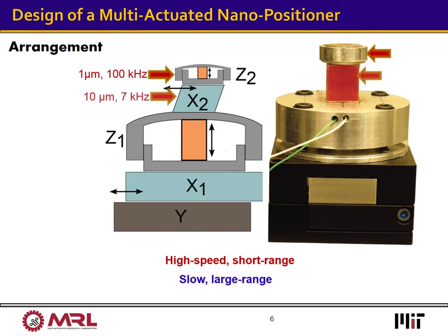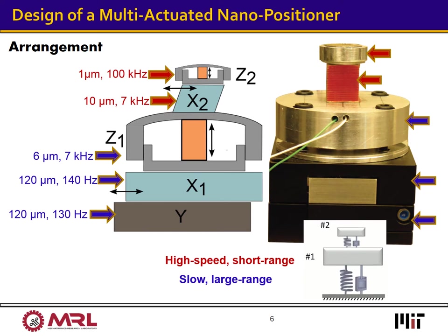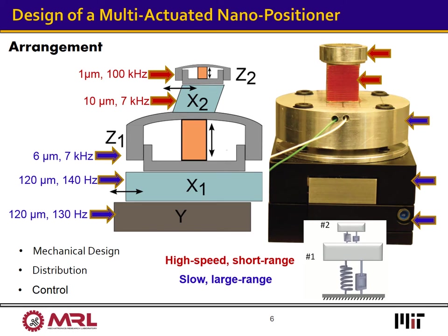To achieve large positioning range and high speed at the same time, we propose a nanopositioner design composed of several actuators, some featuring high speed and short range denoted in red, others slower with large kinematic range denoted in blue. Serial arrangement of multiple nanopositioners, however, leads to dynamic coupling — actuating one positioner will excite the dynamics of other interconnected actuators. This generates additional challenges which need to be handled by proper mechanical design, optimal distribution of masses in the multi-actuated system, and application of robust and tunable control strategies to accommodate system dynamic variations.